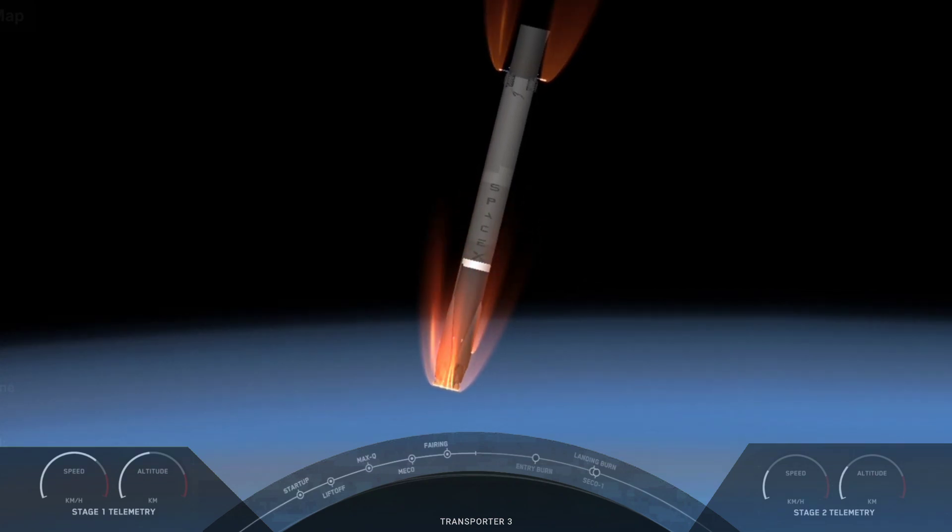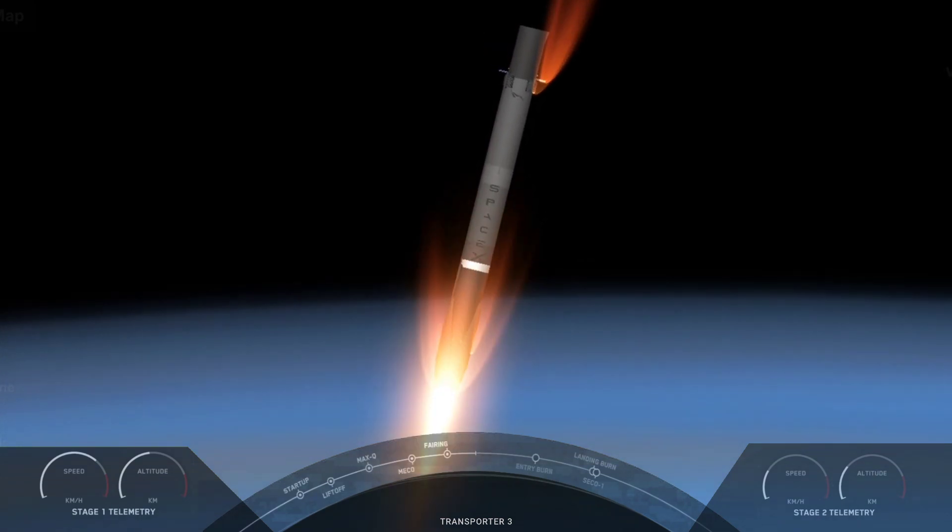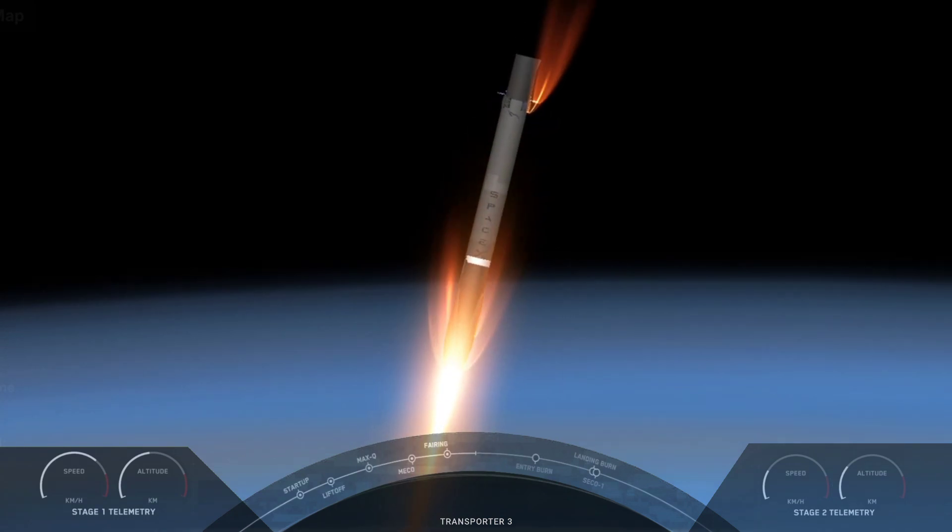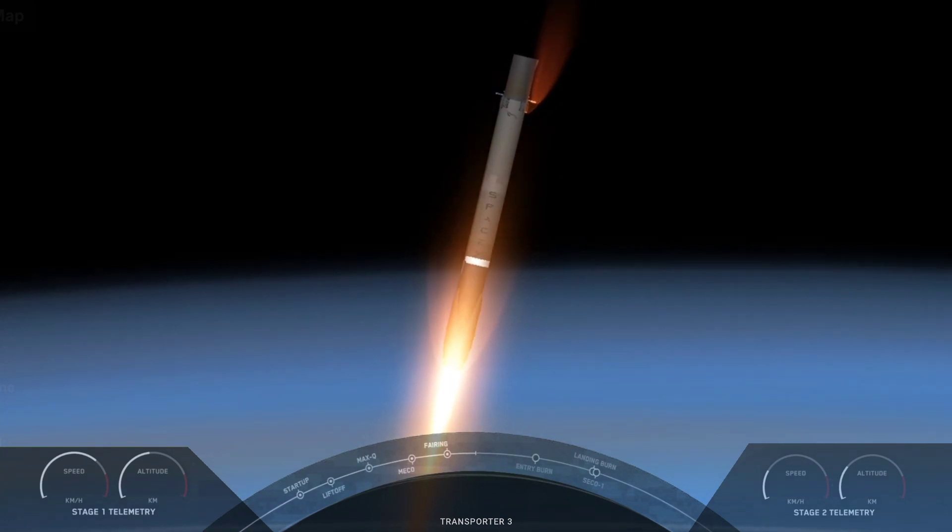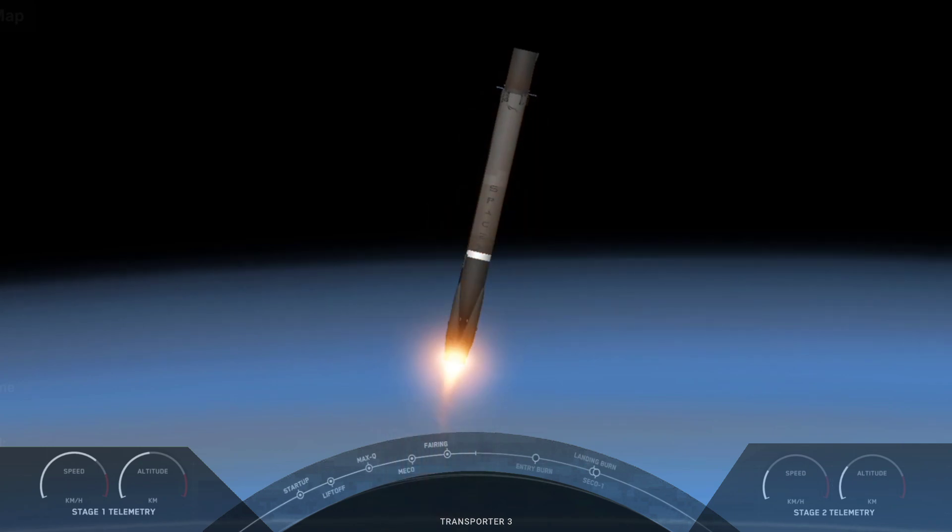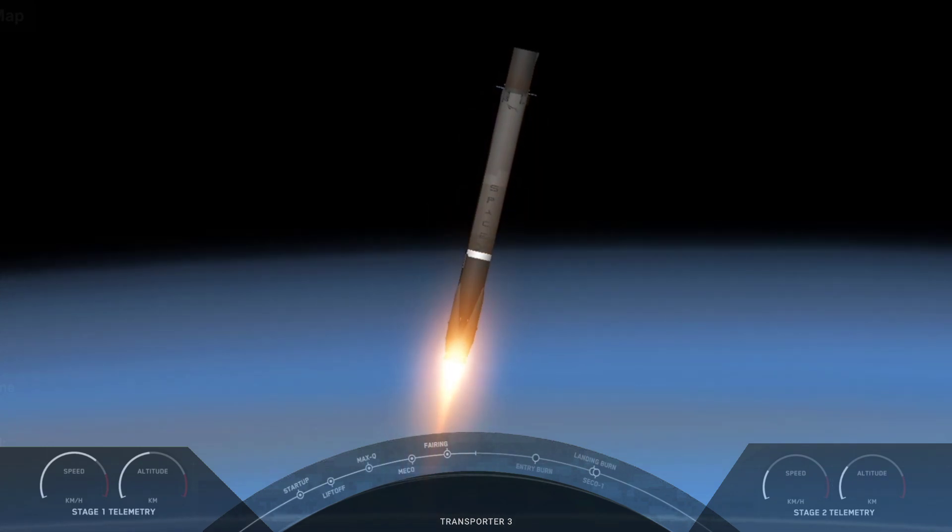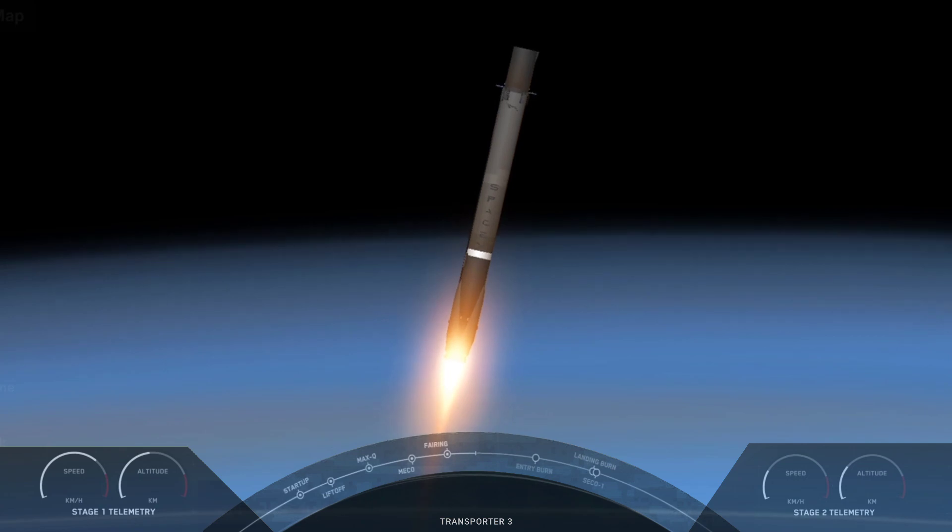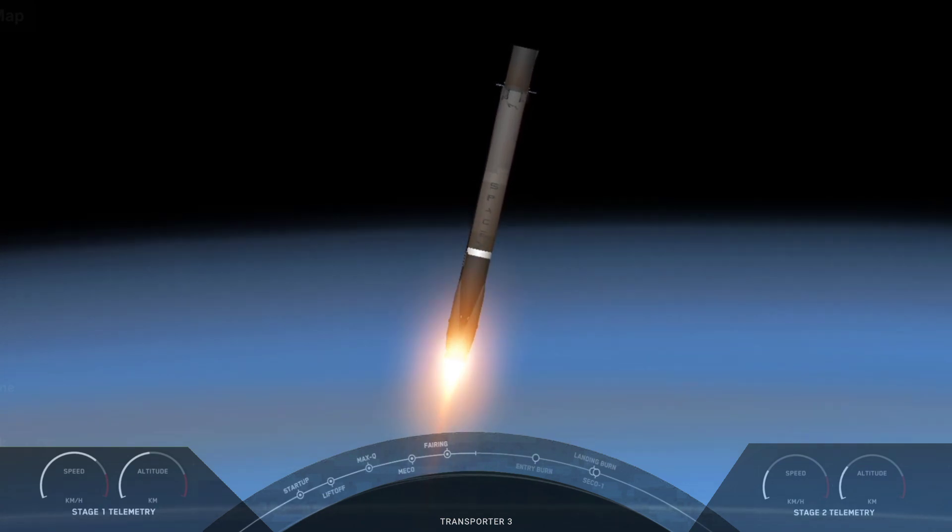After first stage landing, the second stage will cut off its Mvac engine and relight it approximately 45 minutes later for deployment of all 105 spacecraft. And there on your screen we can see that that entry burn has begun. Once again, this burn is designed to slow the booster down as it returns through the dense part of the atmosphere.